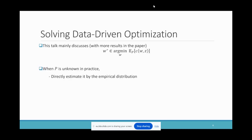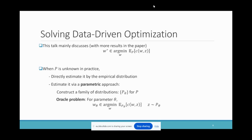If the data distribution P is known, then this problem is classical stochastic optimization. If P is unknown, we need to estimate it. We may estimate directly by the empirical distribution — this is essentially SAA. An alternative approach is to infer it via a parametric approach. We first construct the family of distributions P_theta for P, where theta is the parameter — for instance, a family of multivariate Gaussian distributions where theta is the mean vector and covariance matrix.